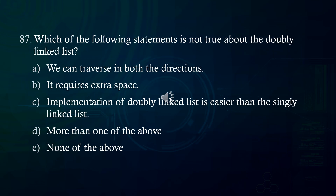Which of the following statements is not true about the doubly linked list? A. We can traverse in both directions. B. It requires extra space. C. Implementation of doubly linked list is easier than the singly linked list. D. More than one of the above. E. None of the above.